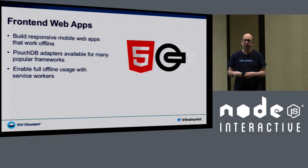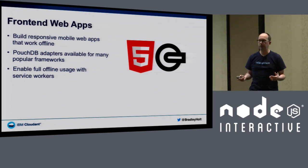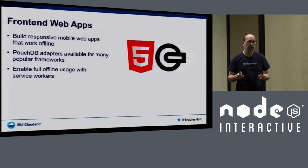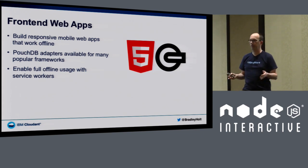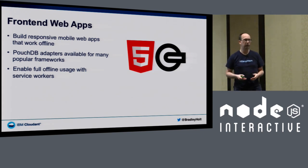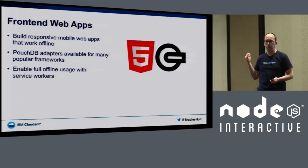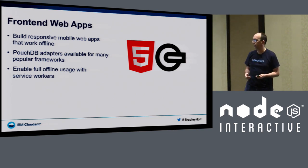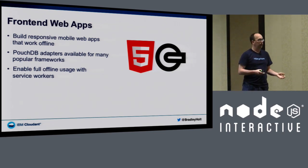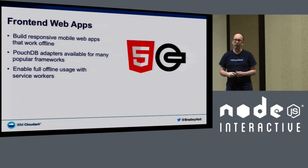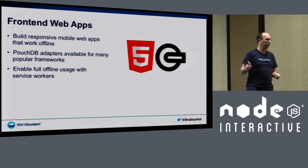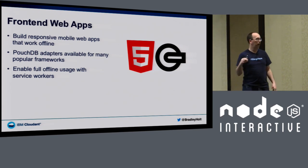I want to talk about four different use cases for PouchDB apps. PouchDB is a JavaScript database that syncs, and since JavaScript can run anywhere, PouchDB can run in a whole bunch of different environments. First, front-end web apps: if you're building HTML5, CSS, JavaScript apps using responsive design, you can use PouchDB to store data within the browser. In a browser context, PouchDB uses IndexedDB or another form of local storage under the hood, but provides a nice abstraction layer plus synchronization capabilities on top of that.